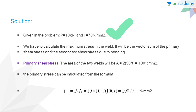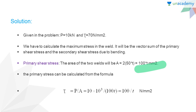The primary shear stress can be calculated with the help of the area of the two welds. The area will be A equals 2 × 50 × t, where 50 is the length of the weld and t is the throat of the weld. For two fillet welds, the total area is 100t mm². The primary shear stress tau₁ = P/A = (10 × 10³) / (100t) = 100/t newton per millimeter square.